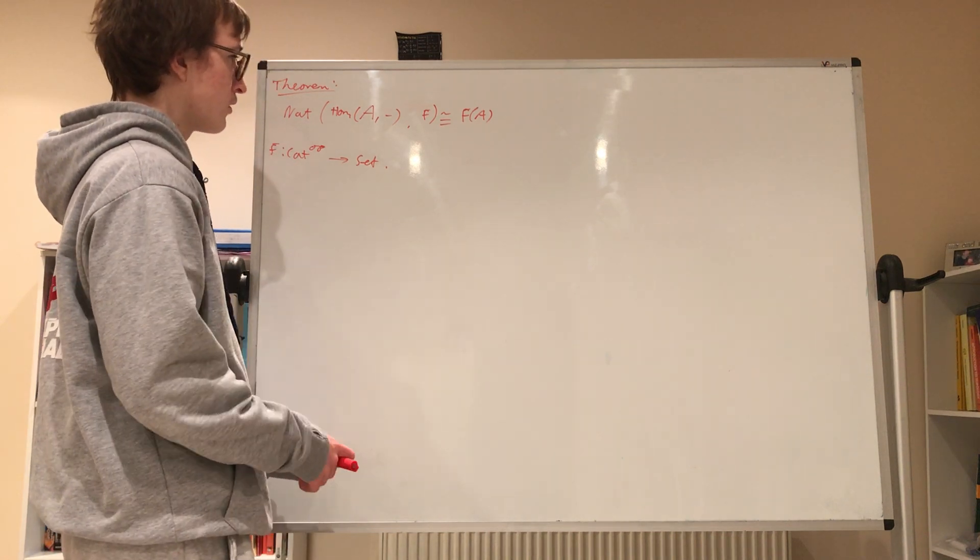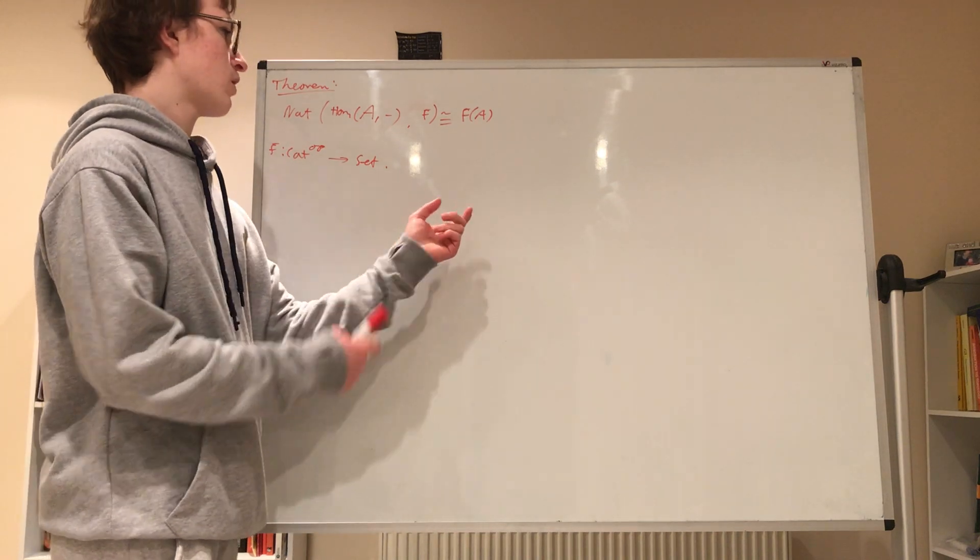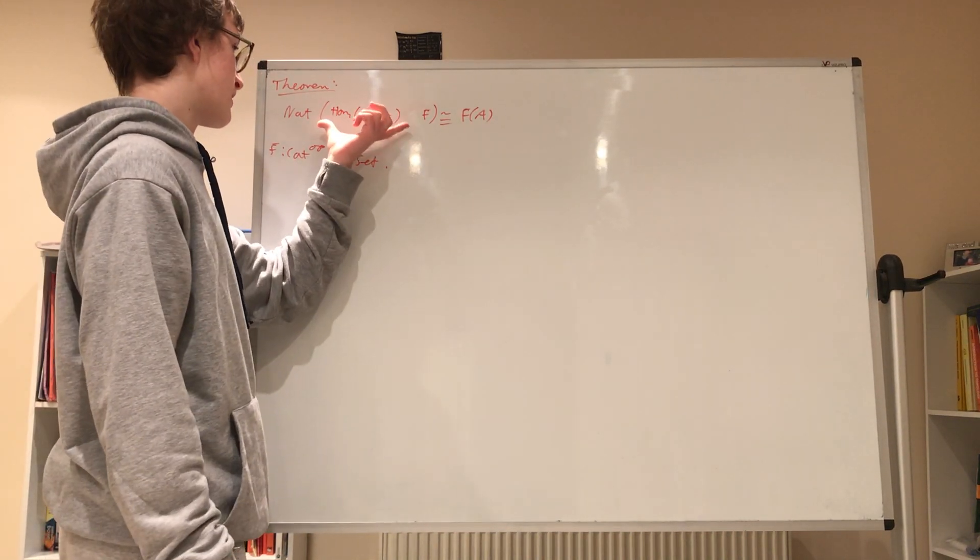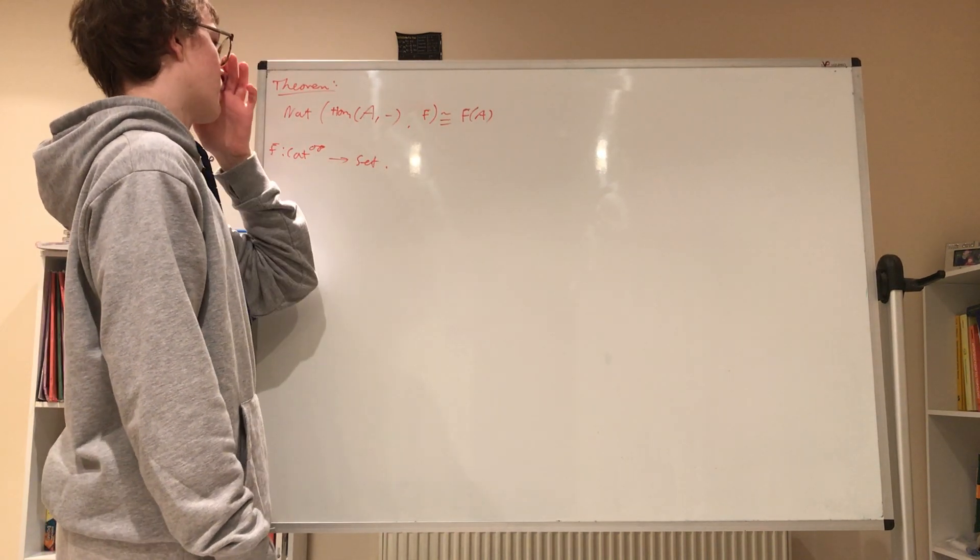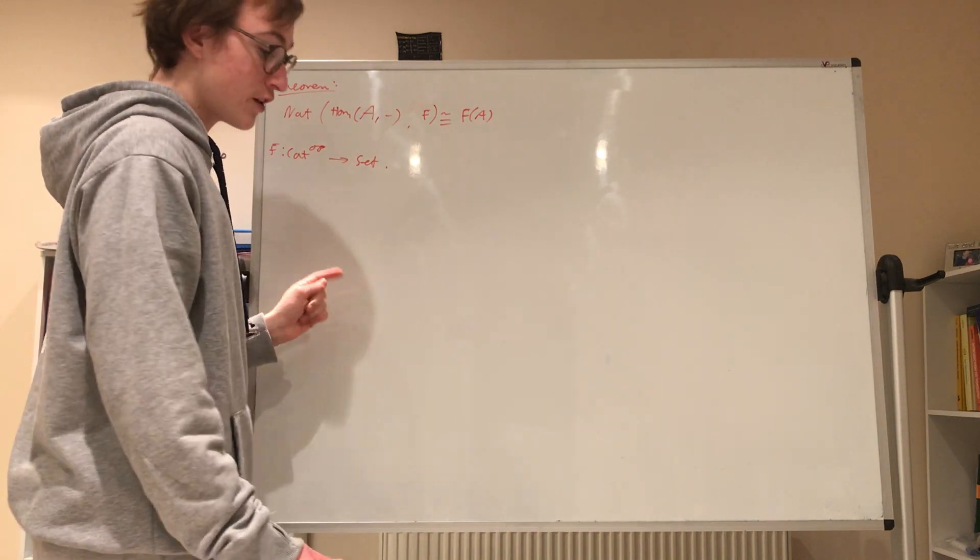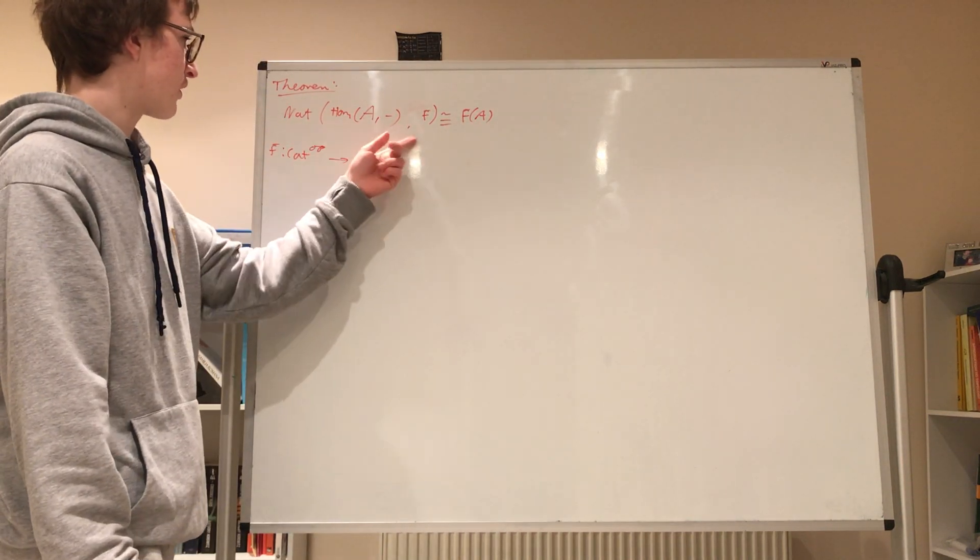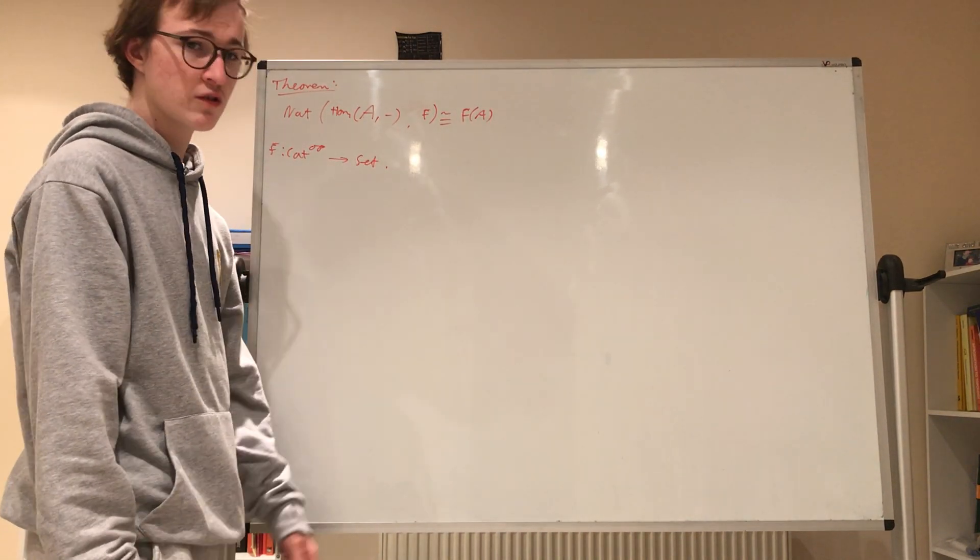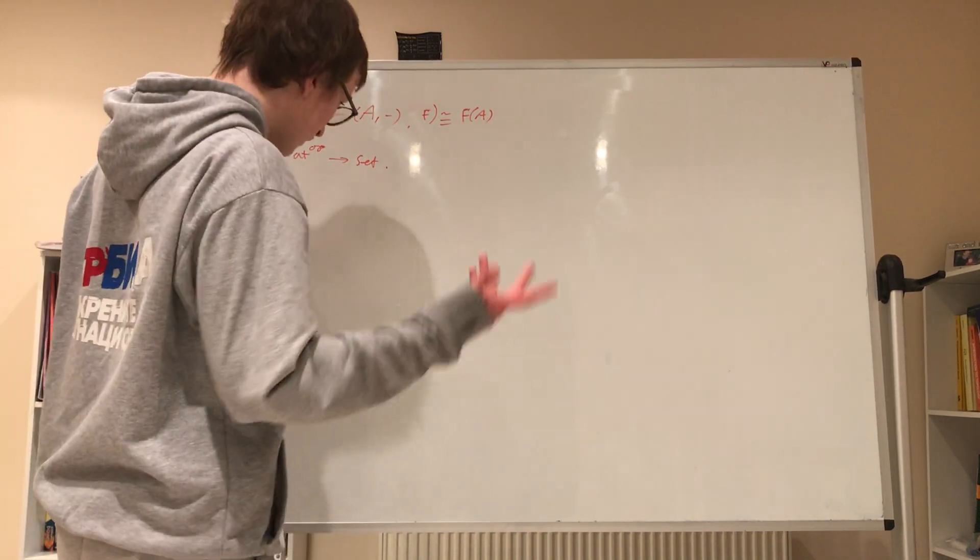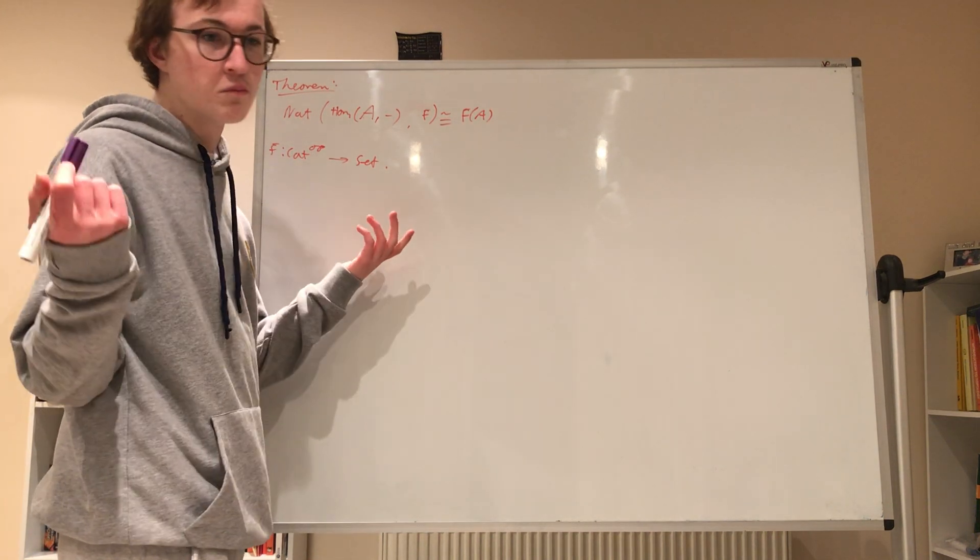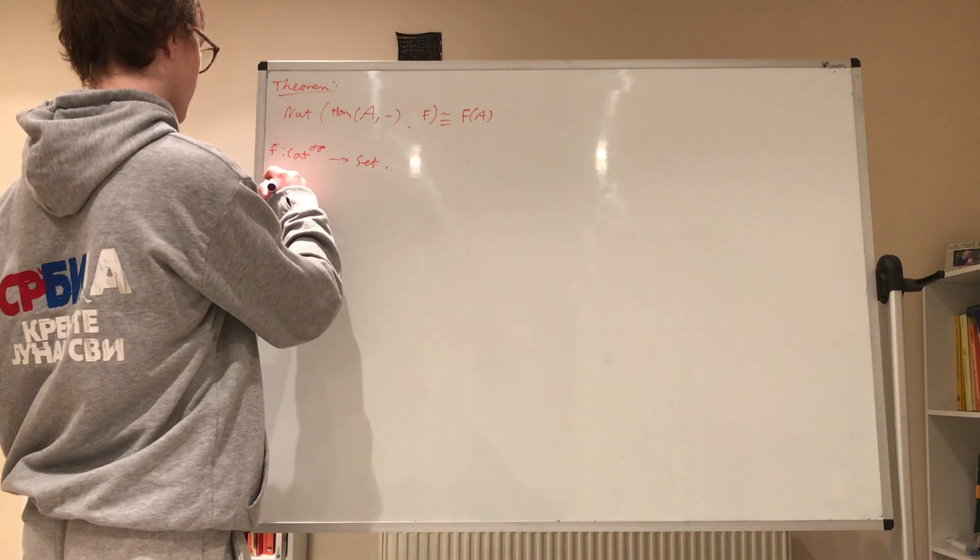So basically there's the same amount of elements of this set as there are natural transformations between Hom_A(-) and F. So, that seems pretty unlikely, but it turns out to be true. When you stop and think about it, you think about all the different possibilities there could be of natural transformations, you'd think surely there must be more than just there are elements in F of A, but it turns out that's not okay. So let's just prove this.